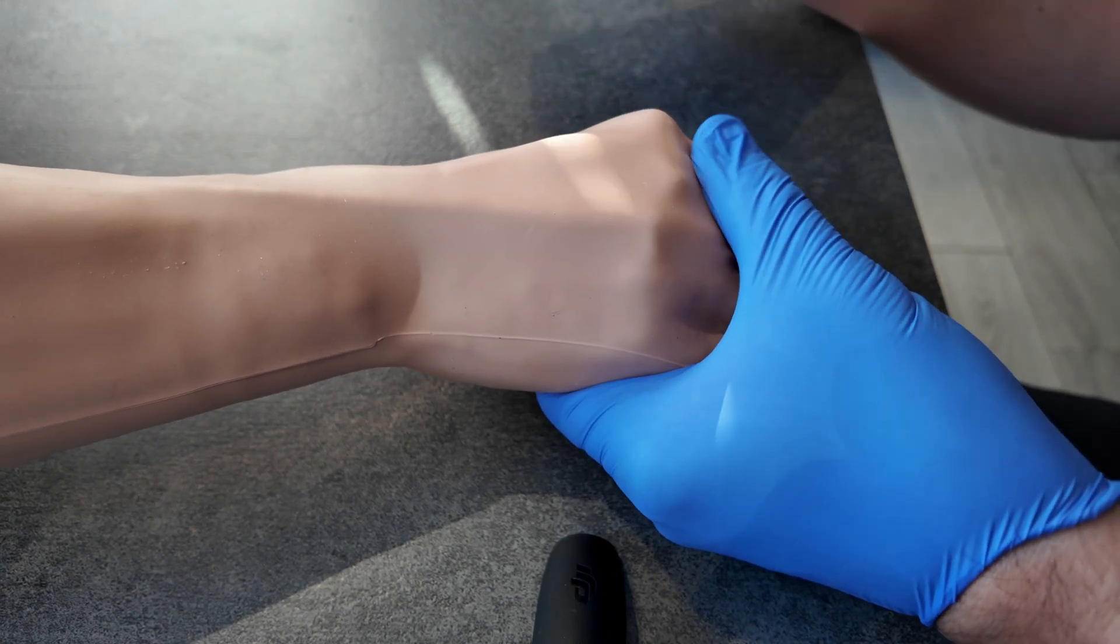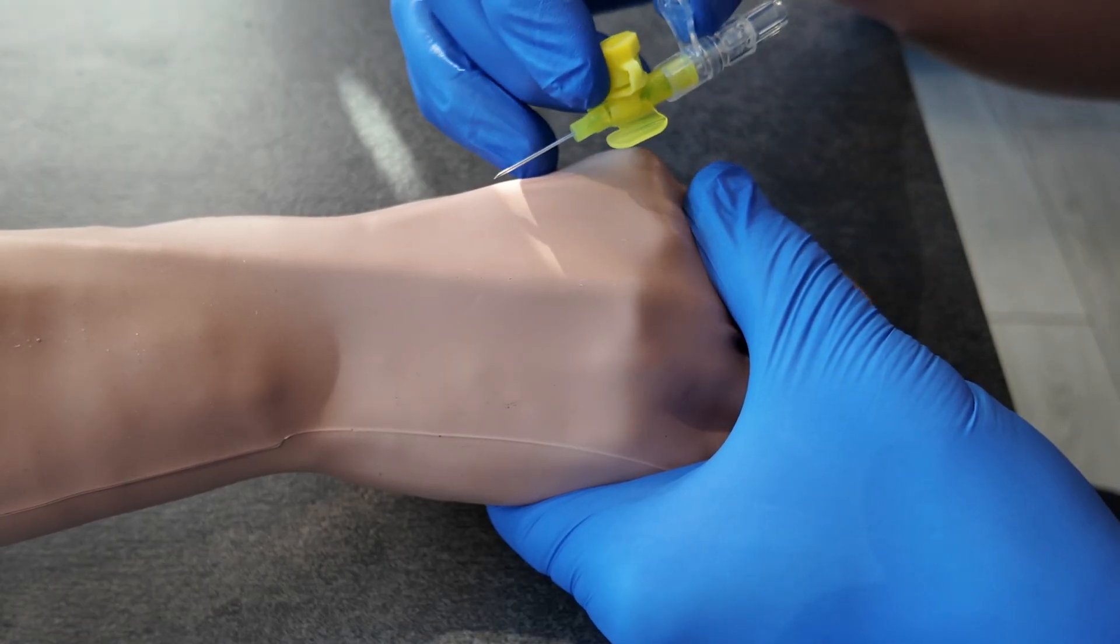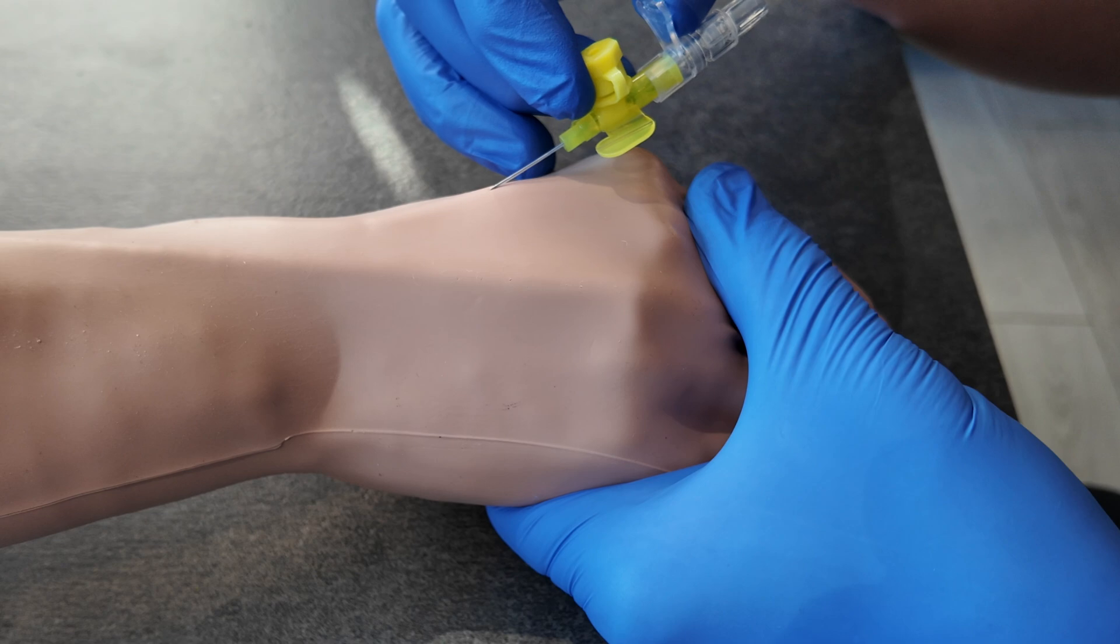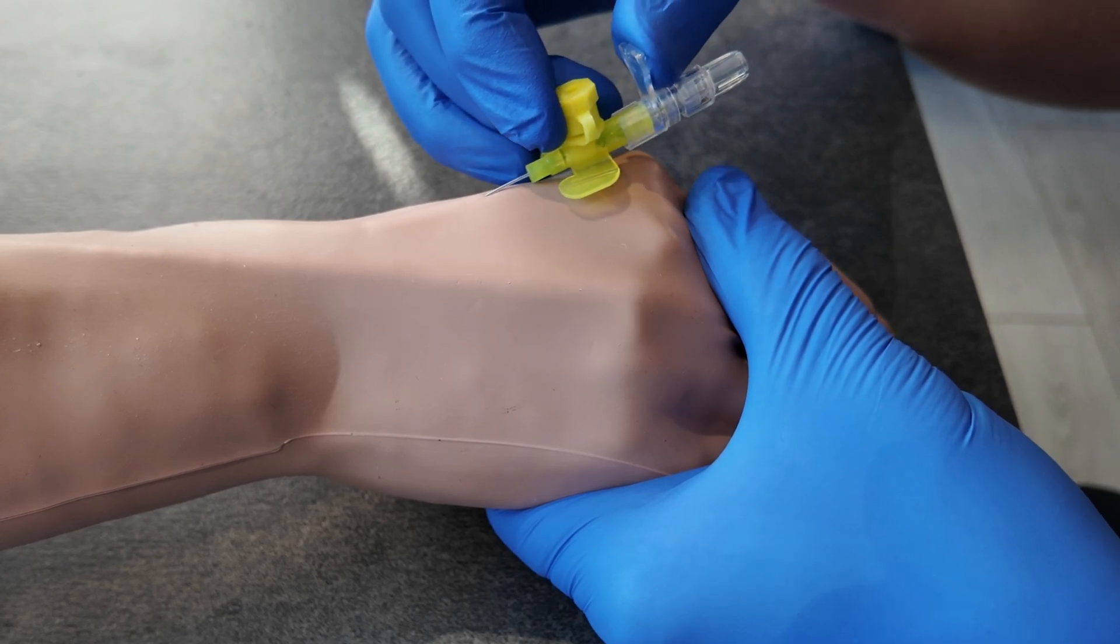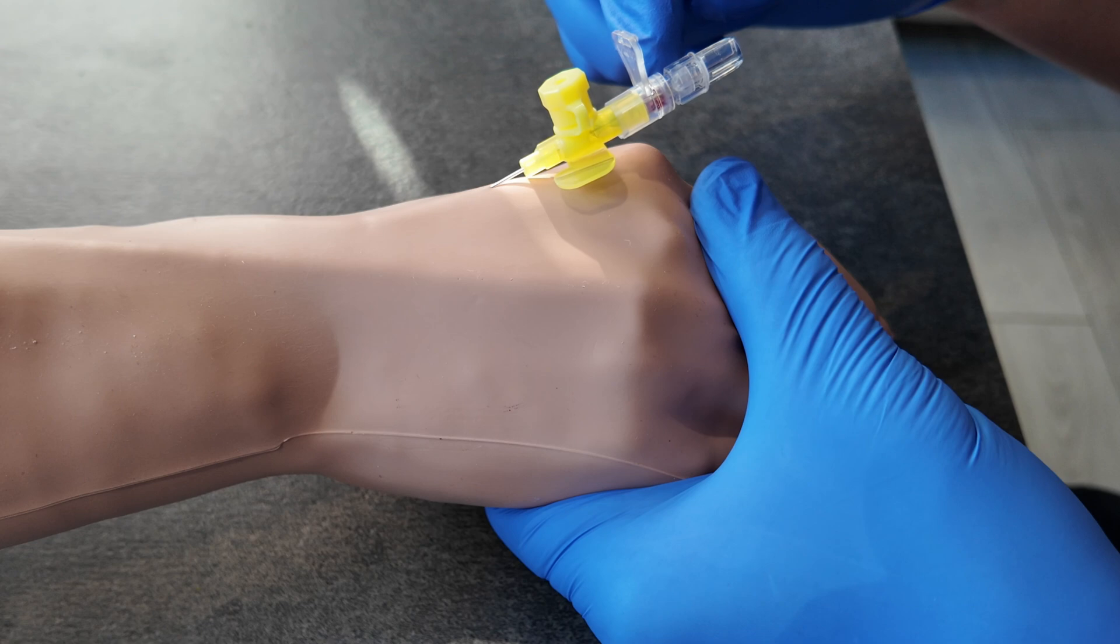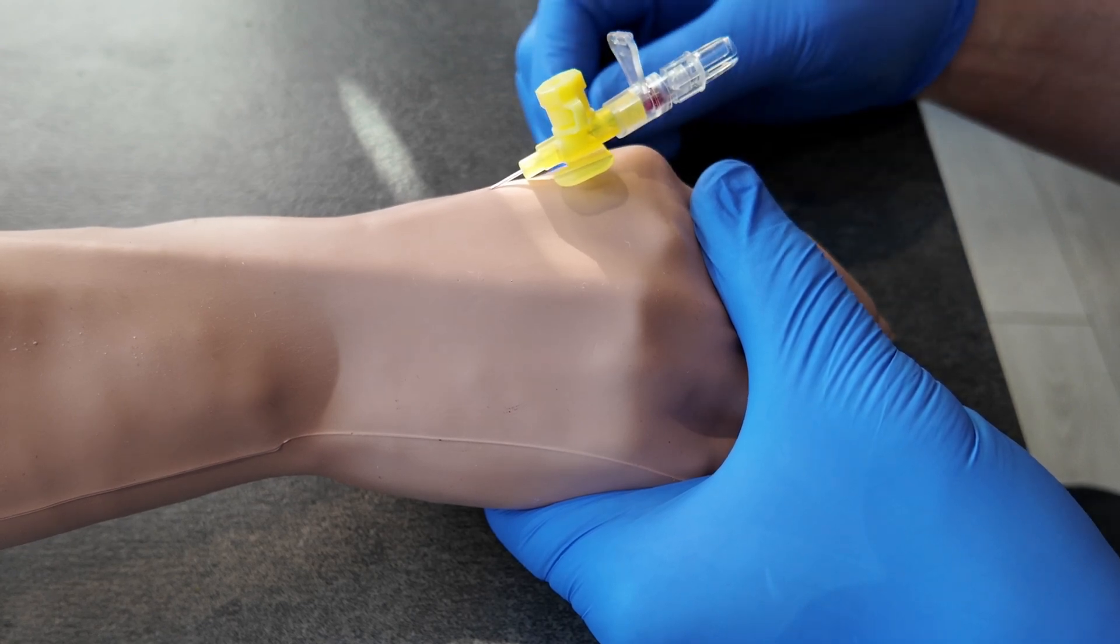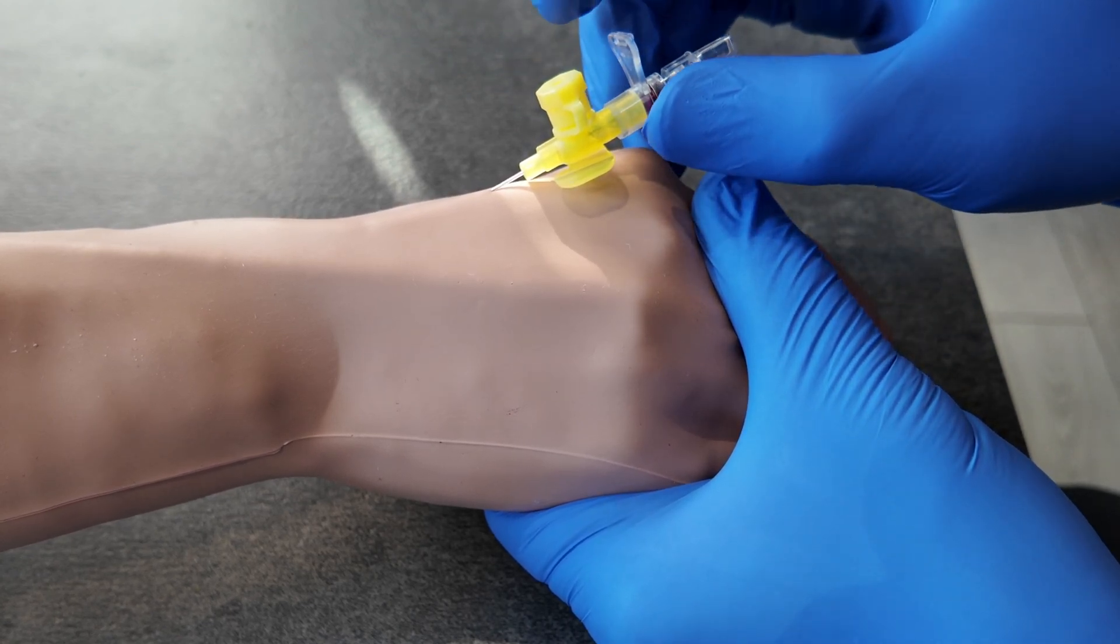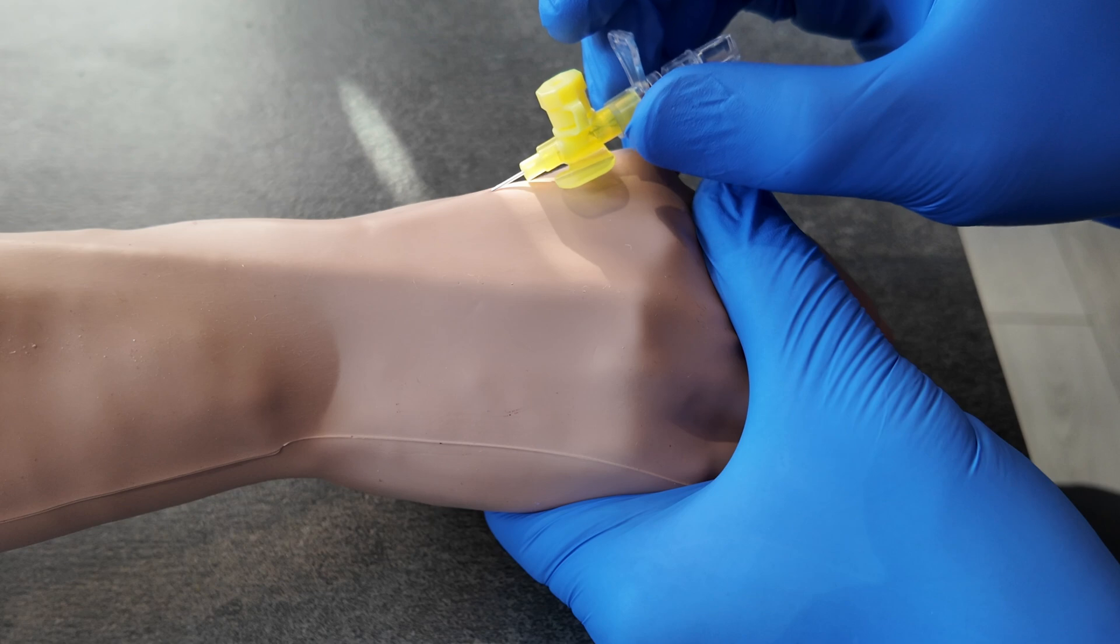Hold the hand like this, choose our vein, enter at 10 to 20 degrees, and advance the cannula until you get flashback in the flashback chamber here.